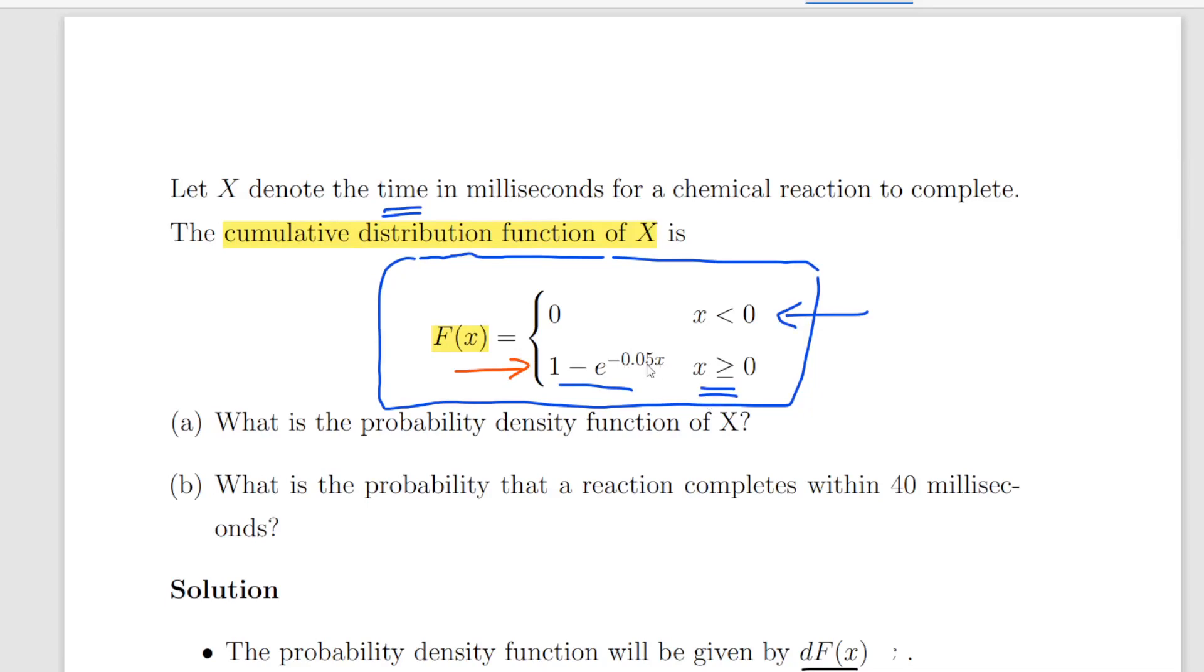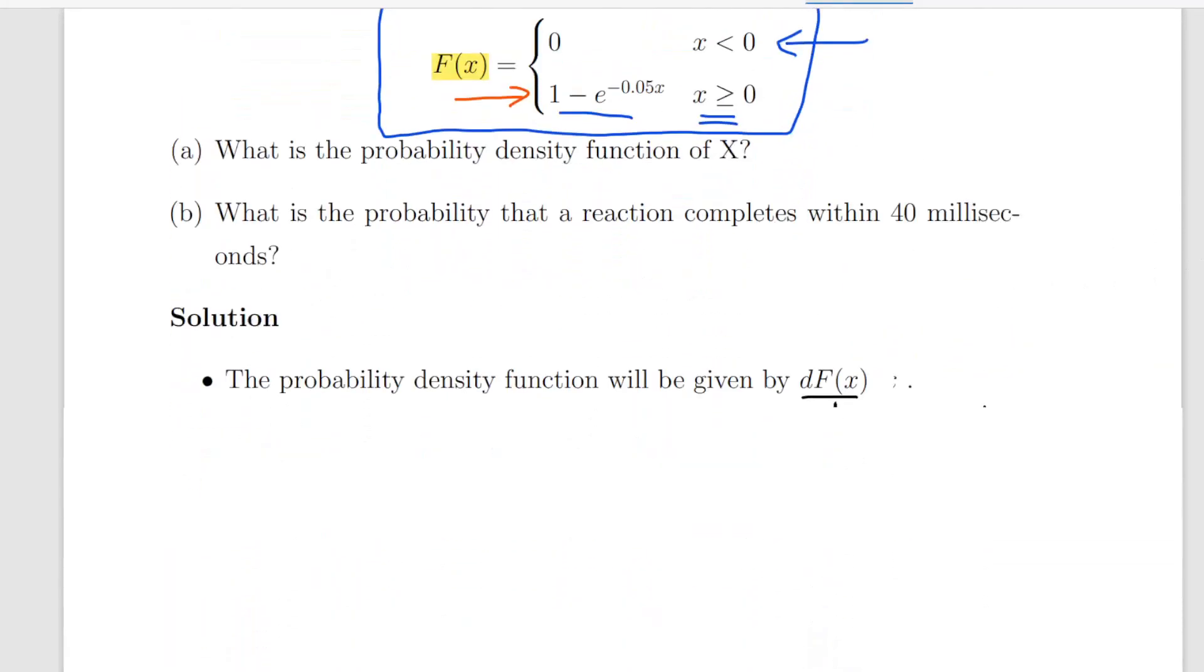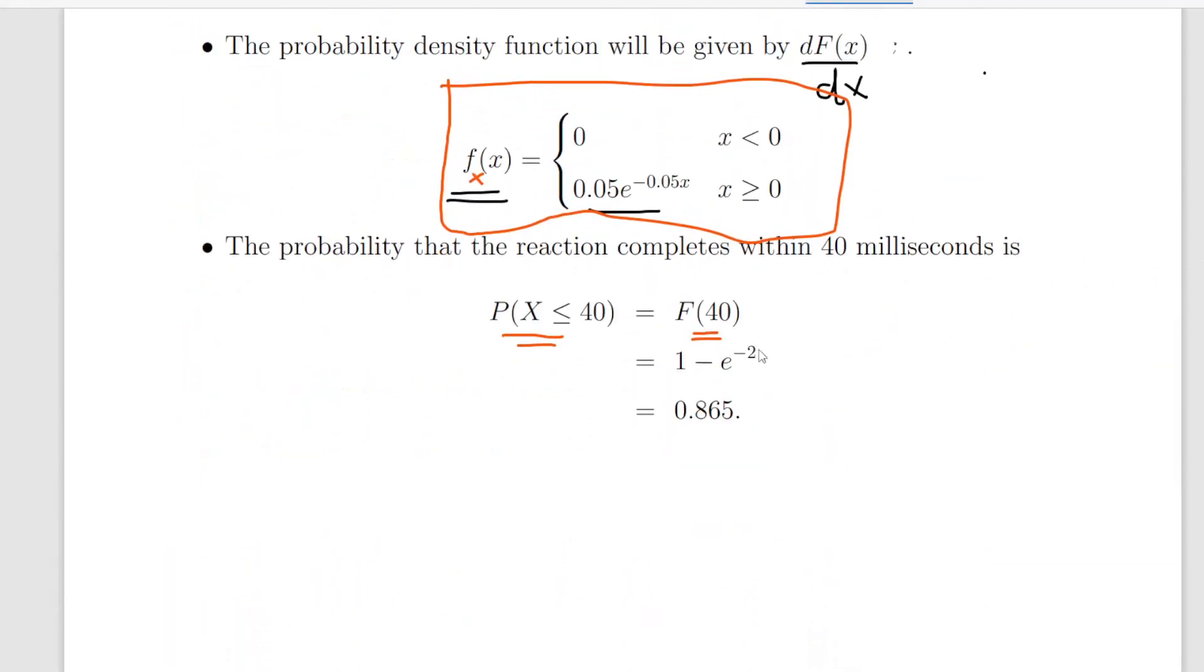So 0.05 times 40 is 2 actually. So what we have there is 1 minus e to the minus 2. A little bit of calculator work and that should work out to be 0.865. So that's the first one.